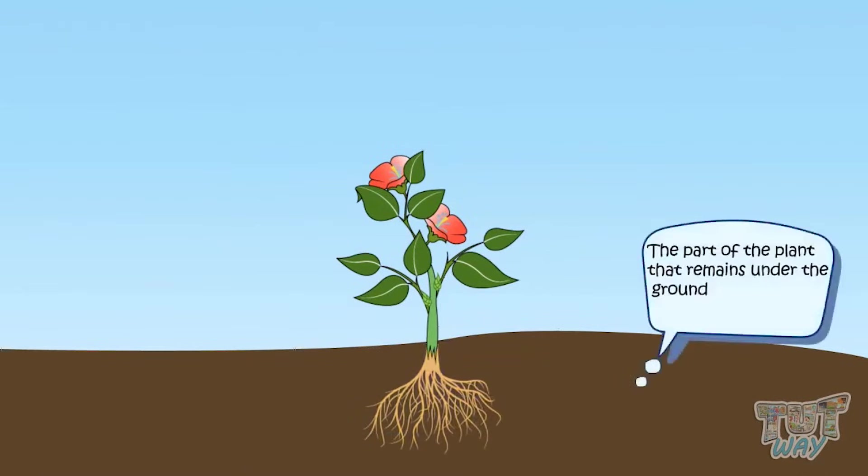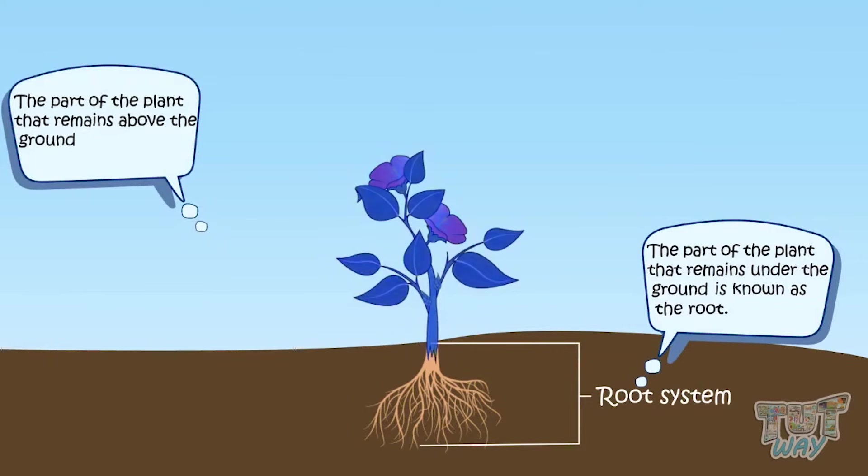The part of the plant that remains under the ground is known as the root. The part of the plant that remains above the ground is known as the shoot.